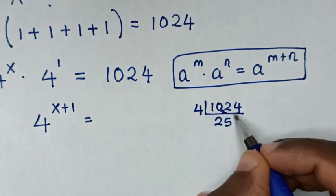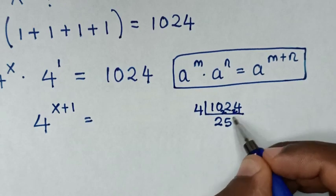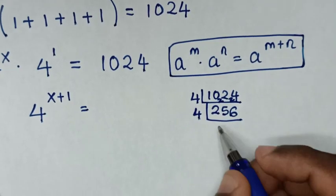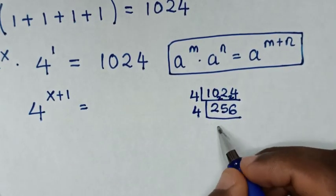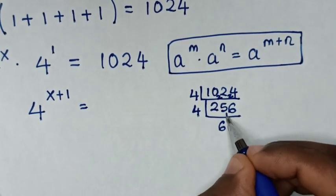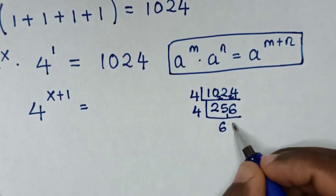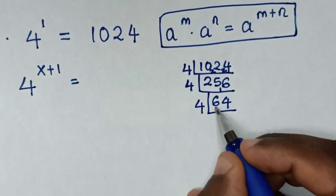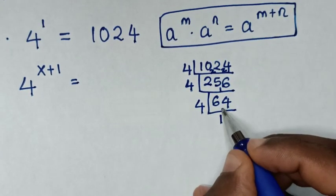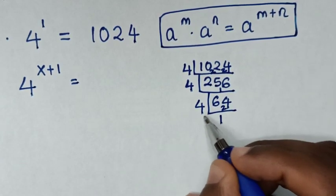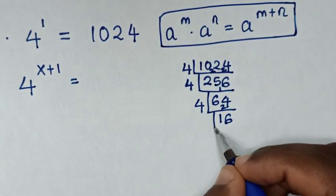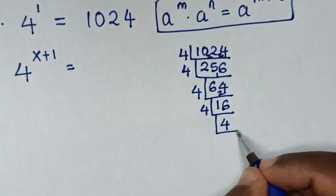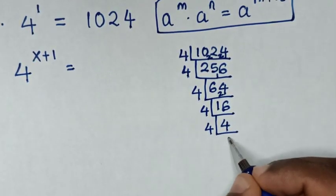So 4 power of x plus 1 equals 1024. Now we convert 1024 by dividing by 4 repeatedly: 1024 divided by 4 is 256, divided by 4 is 64, divided by 4 is 16, divided by 4 is 4, divided by 4 is 1. That gives us 4 power of 5.